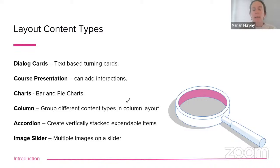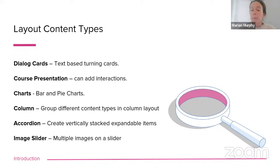Just some examples on the layout content type. You could have dialogue cards, which are text-based turning cards. You can upload a course presentation and add interactions to the slides. You have bar and pie charts. You have a column, which is basically where you're grouping multiple H5P content types into one layout. You have the accordion, which I mentioned, and you have the image slider where you can have multiple images on a slider.